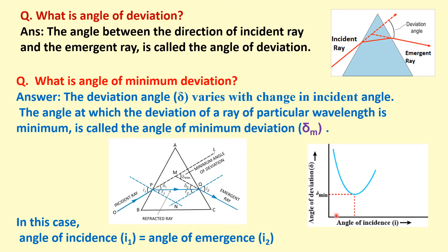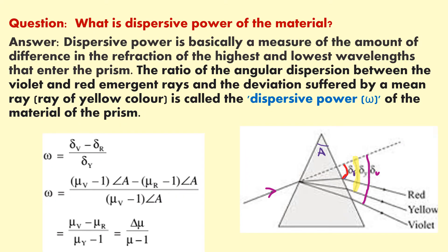We can also see that as we change the angle of incidence, the angle of deviation changes, and the minimum value of that deviation is known as the minimum deviation — the angle of minimum deviation.